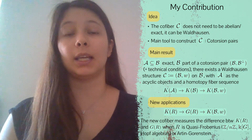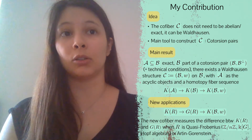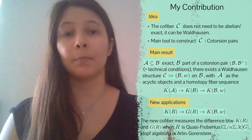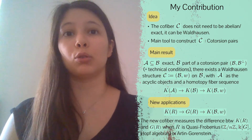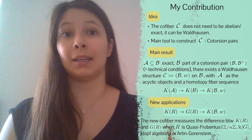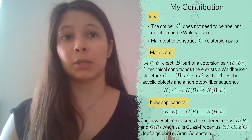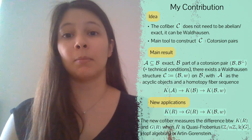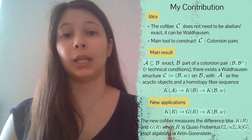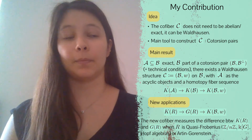For example, if we take R to be a quasi-Frobenius or an Artin-Gorenstein ring, then we can choose suitable categories A and B in a way that the fiber sequence we obtain through the theorem will measure the difference between K of R and G of R.